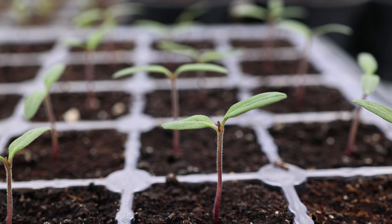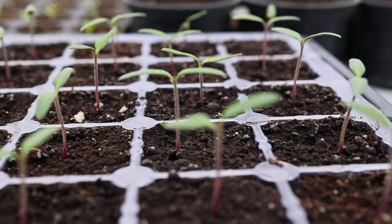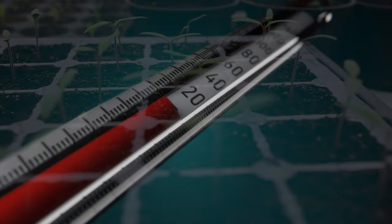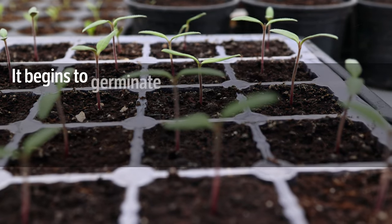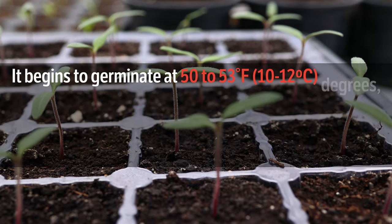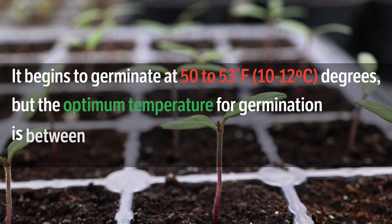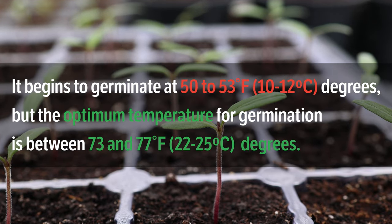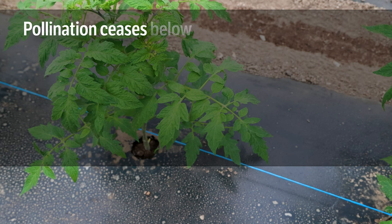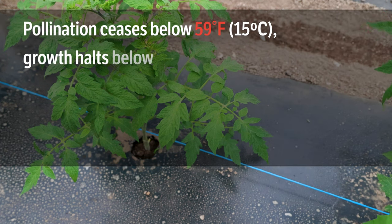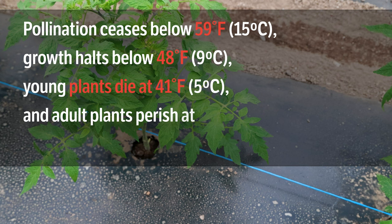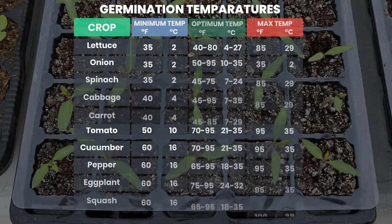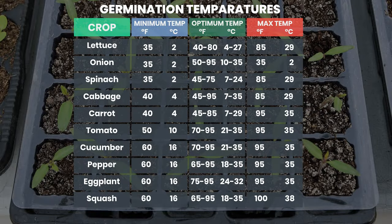Optimum temperatures for the growth and development of tomatoes: tomatoes require a lot of heat for successful growth and development. They begin to germinate at 50 to 53 degrees, but the optimum temperature for germination is between 73 and 77 degrees. Pollination ceases below 59 degrees, growth halts below 48, young plants die at 41, and adult plants perish at 30 degrees. It makes sense to delay sowing during a cold spring.